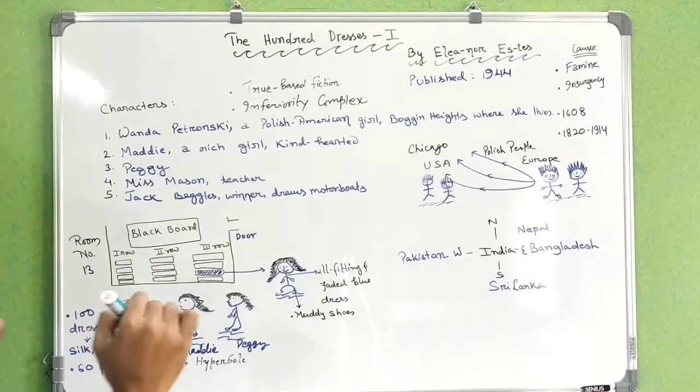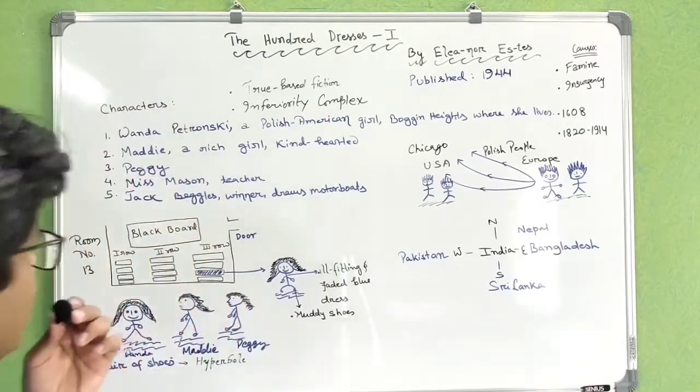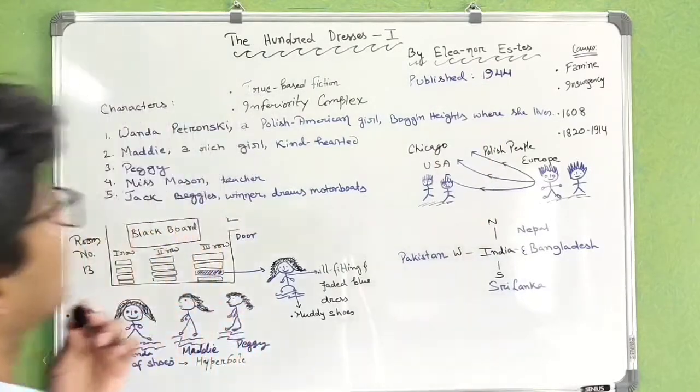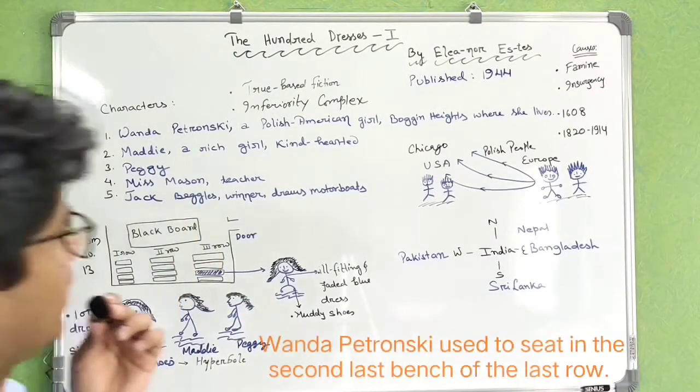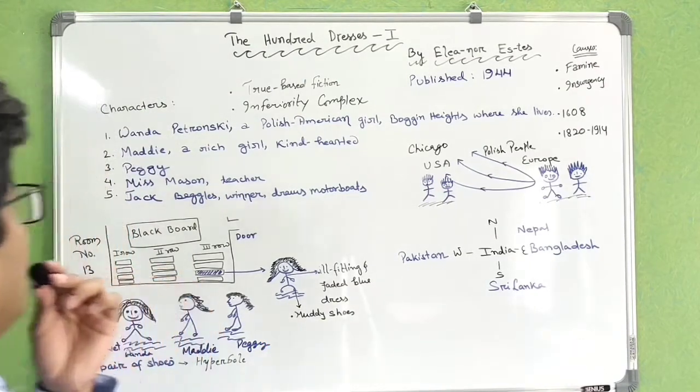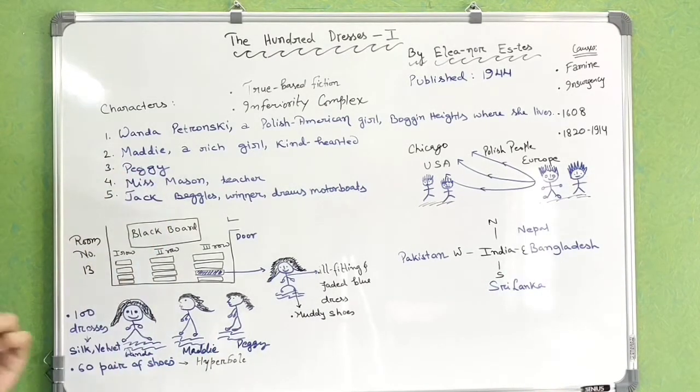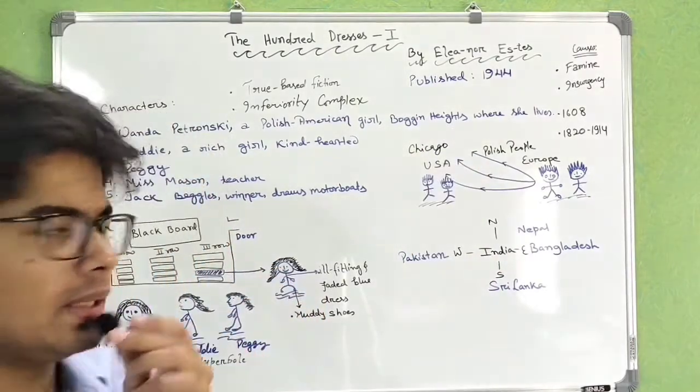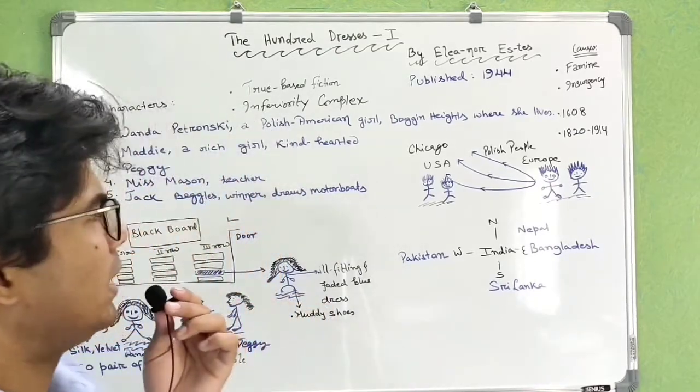This story is somewhat based on a true experience by the author herself, Eleanor Estes. Wanda Patronsky is a Polish-American girl who used to be hated by her classmates Maddy and Peggy.